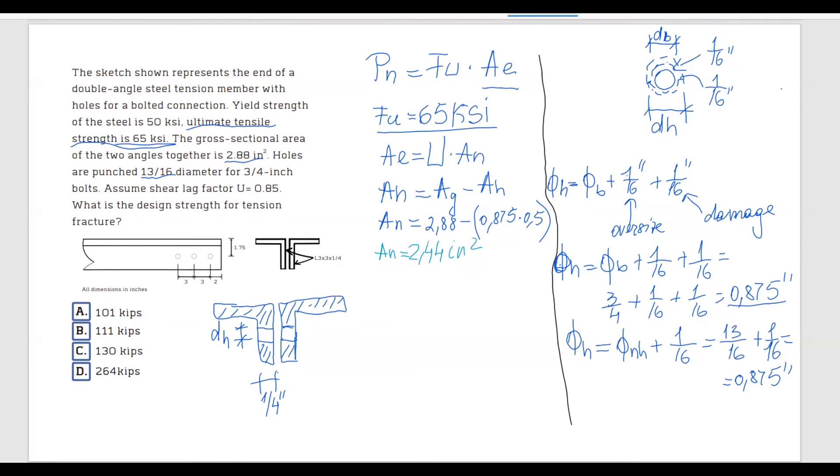And now that we know the net area, we can calculate the effective area, which is equal to U times AN. And this equals 0.85, the shear lag factor is given in the problem, and the net area is 2.44. And this gives us that effective area is equal to 2.08 inches squared.